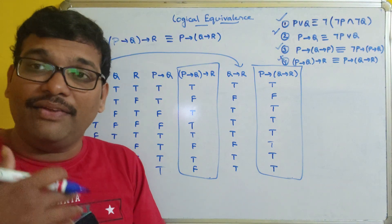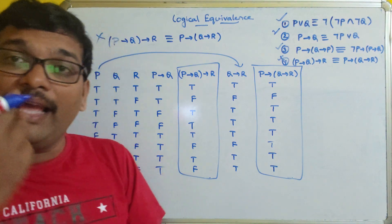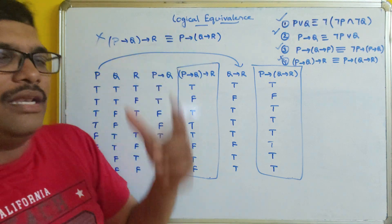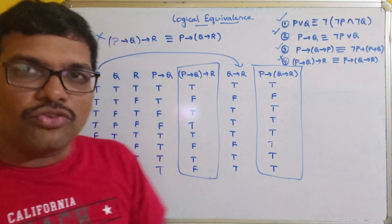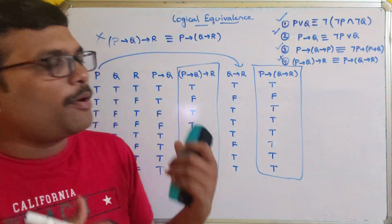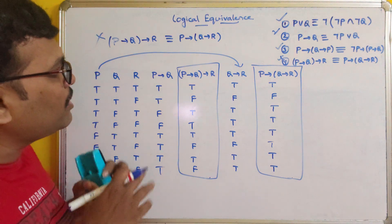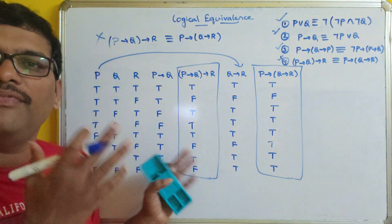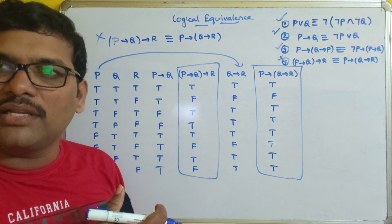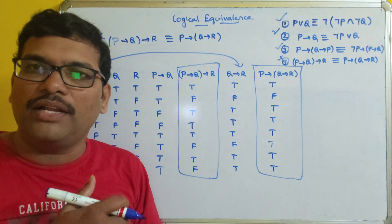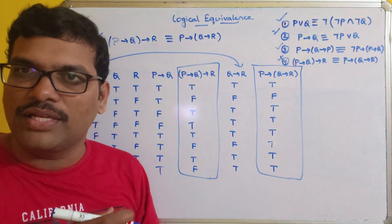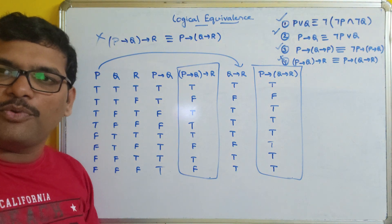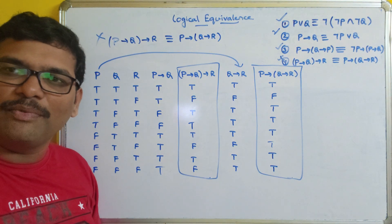In our next session, we'll see the different types of laws and then go with the second approach — using those laws to find logical equivalents. Hope you understood this. Practice more propositions and try to understand the concept. If you have any doubts or difficulty constructing truth tables, feel free to post in the comment section. I'll try to clarify all your doubts. If you enjoyed my session, like, share, and don't forget to subscribe to our channel. Thanks for watching.